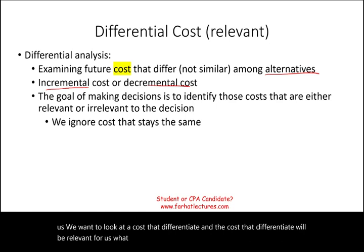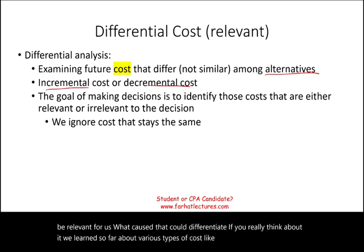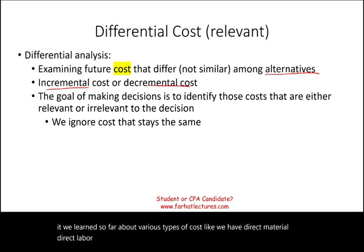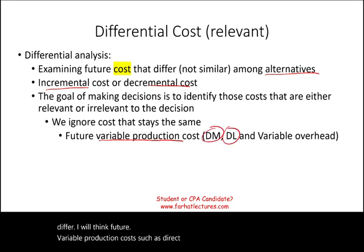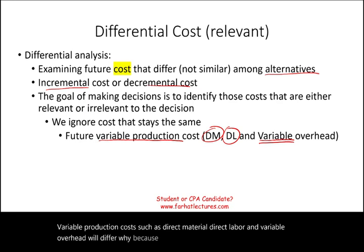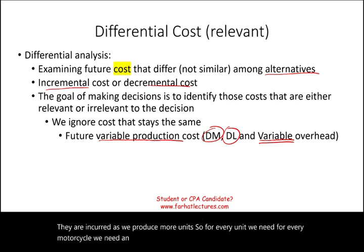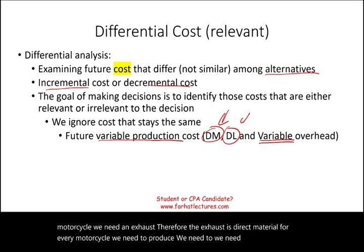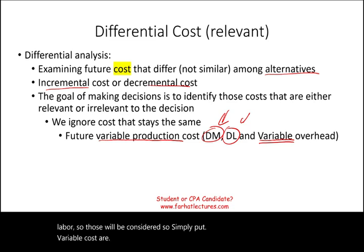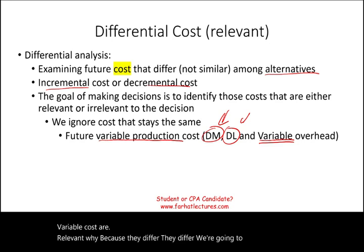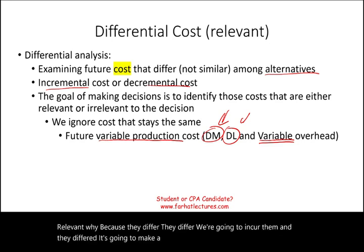Variable costs are relevant because they differ. We've learned about direct material, direct labor, and manufacturing overhead. Future variable production costs — such as direct material, direct labor, and variable overhead — will differ because they are incurred as we produce more units. For every motorcycle we produce, we need an exhaust as direct material and must incur direct labor. Variable costs increase our total cost and are therefore relevant.